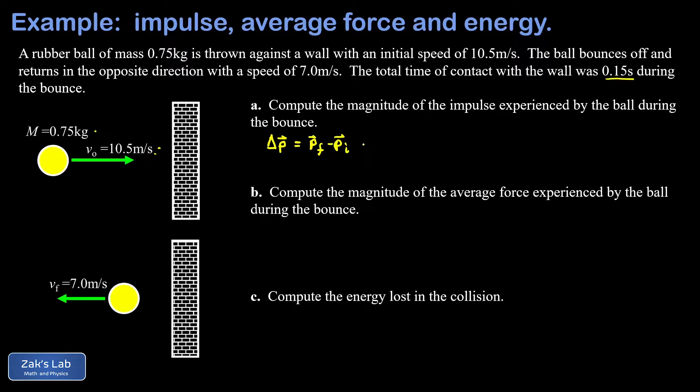Our final momentum is the mass of the ball times final velocity, initial momentum is the mass times initial velocity. Now we get those velocities in, being very careful to use plus and minus signs to indicate direction.